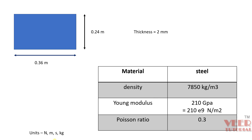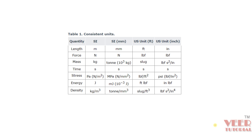Here we have the dimensions of this plate. Let's understand the unit system. In this problem we are going to follow newton, meter, second, kg. The dimensions of the plate are 0.36 m and 0.24 m, with a thickness of 2 mm. The material is steel. Whenever we perform vibration analysis, we have to be careful about units. Abaqus is a unit-less software, so we follow either SI units (meter, newton, kg, second), SI mm units (mm, newton, ton, second), or US units (feet and inches).